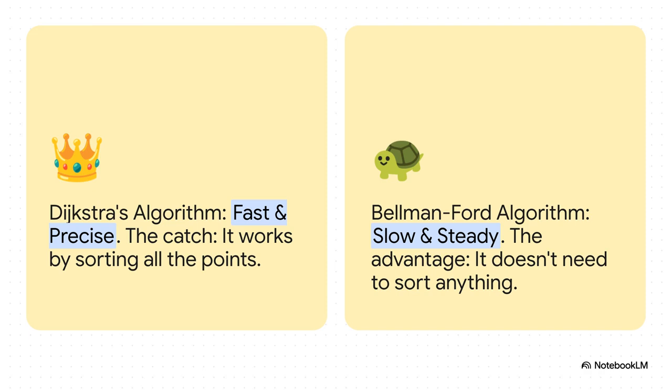Now to really get this breakthrough, you have to know about the two classic contenders in this field. In one corner, you've got Dijkstra's algorithm. It's fast, it's precise, it's the champ. But its entire strategy depends on sorting points by how far away they are. And in the other corner, you have the Bellman-Ford algorithm. It's generally slower, but, and this is everything, it doesn't need to sort. That one little difference is the key to this whole story.